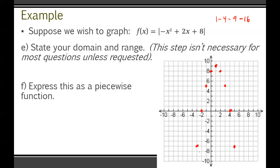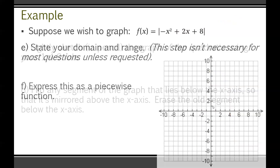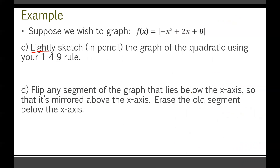With all those points plotted, lightly sketch in pencil the general shape of the quadratic graph. This section down here below the x-axis is going to be lightly shaded in pencil because we need to flip it above the x-axis. Step D: flip any segment of the graph that lies below the x-axis so it's mirrored above the x-axis, then erase the old segment below.